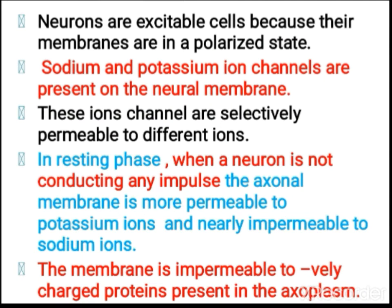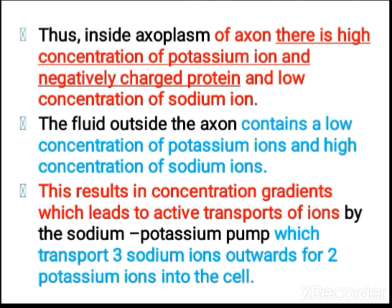Neurons are excitable cells because their membranes are in a polarized state. Sodium and potassium ion channels are present on the neural membrane and are selectively permeable to different ions. During the resting phase, when a neuron is not conducting any impulse, the axon membrane is more permeable to potassium ions and nearly impermeable to sodium ions. The membrane is also permeable to negatively charged proteins present in the axoplasm.